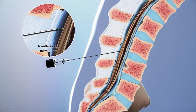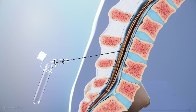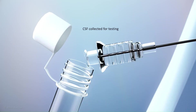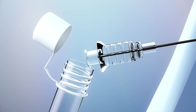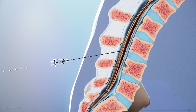Although the needle may come into contact with the nerve roots, they are floating in spinal fluid and move away from the needle, preventing damage from occurring. Once the needle is in place, the spinal fluid drips from the needle hub under the natural pressure of the spinal canal, and 10 to 15 milliliters of fluid is collected in sterile vials. This entire procedure usually takes between 20 and 25 minutes.